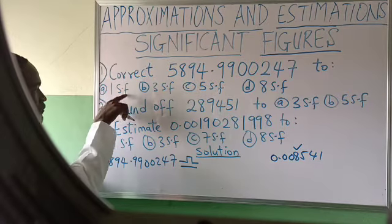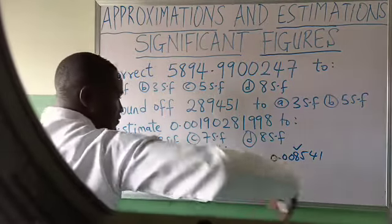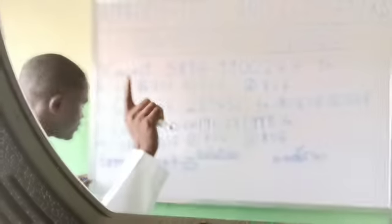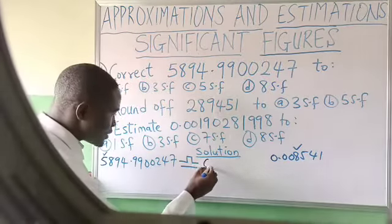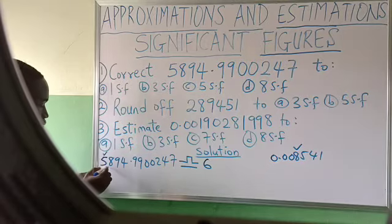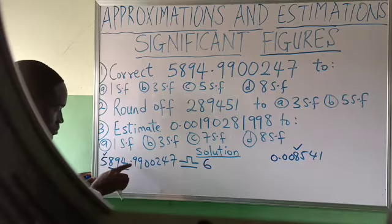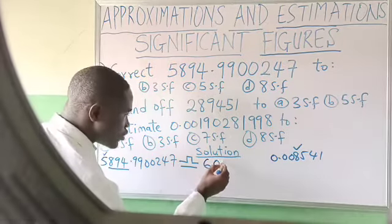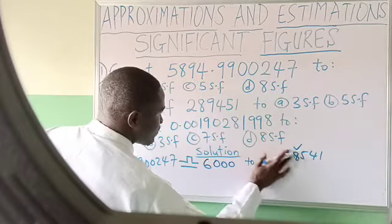To approximate to 1 significant figure, I will start my counting from 5 and count just one digit. Then I ask the next number to the right, which is 8. Is it up to 5? Yes, 8 is up to 5, so I call it 1 and add it to 5 — it becomes 6. Remember, you counted only five. There are three digits before the decimal point, so I use three zeros to replace those digits. That gives us the answer to 1 significant figure.